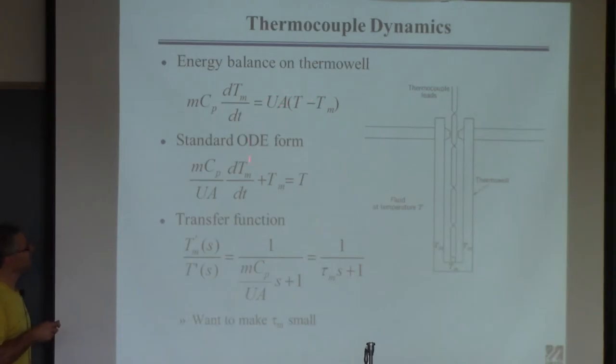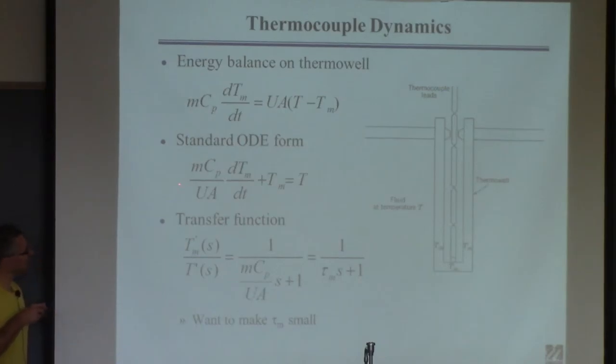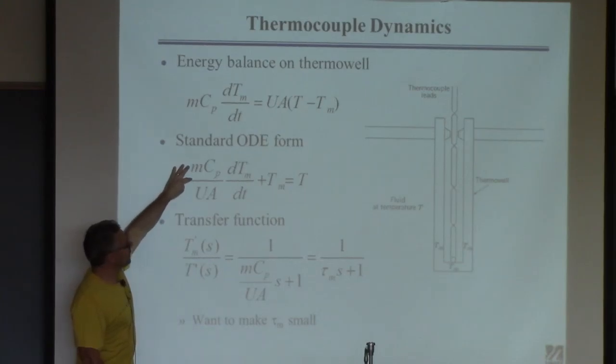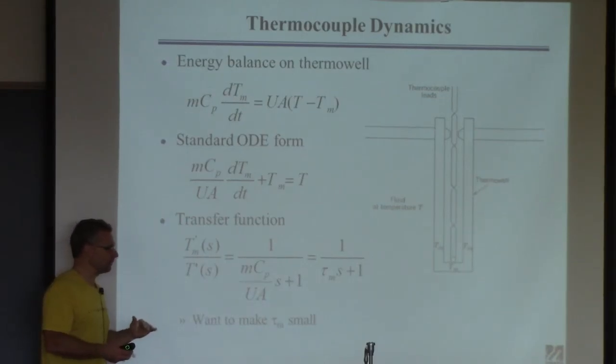So this is a nice linear differential equation. I can rearrange it by dividing by UA and bringing the Tm over here. Why do I like this? Because this is the standard form of a first-order differential equation, that thing we like to call tau. So I can equivalently come up with a transfer function. You're going to start seeing more and more of this. If I tell you I found the transfer function, it's this. I assume at this point you can do it. The problems get more steps as we get more advanced, and I'm not going to show every step.